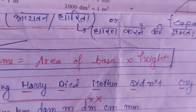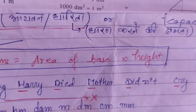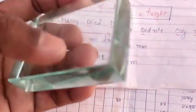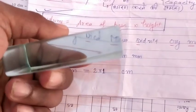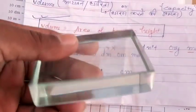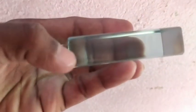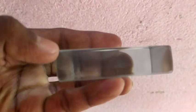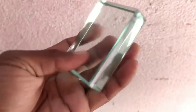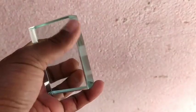This formula applies to any kind of object. For example, I take this cuboid. If you place it this way, the bottom side is known as the base. The area of this base will be multiplied by the height — the distance between the two ends is the height.